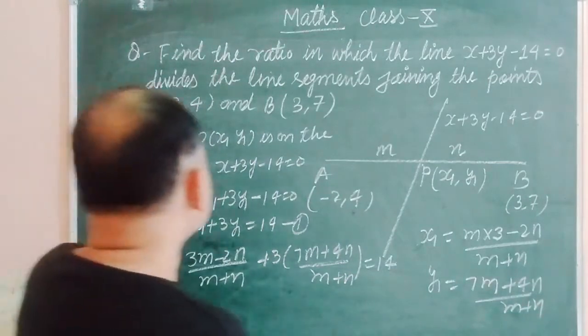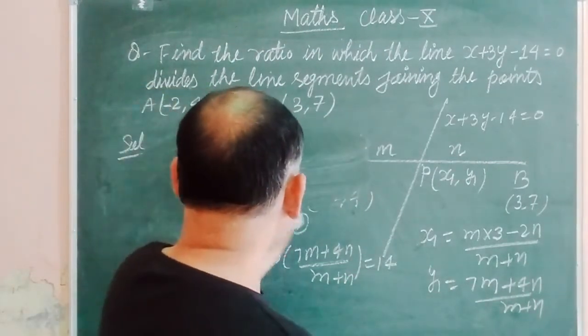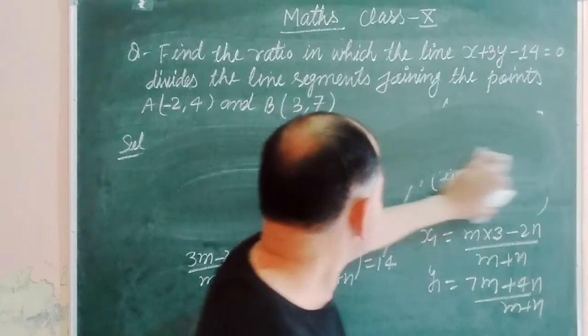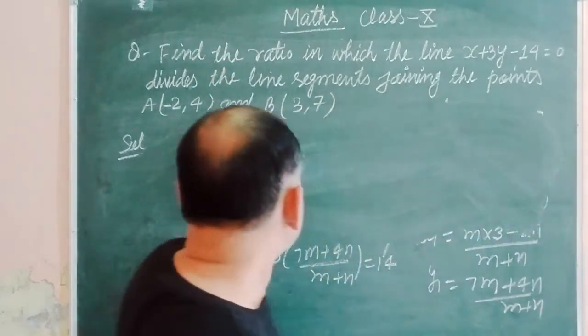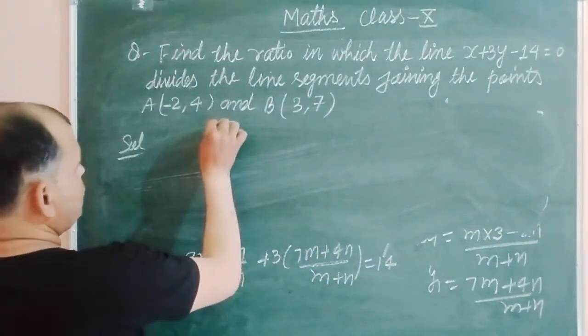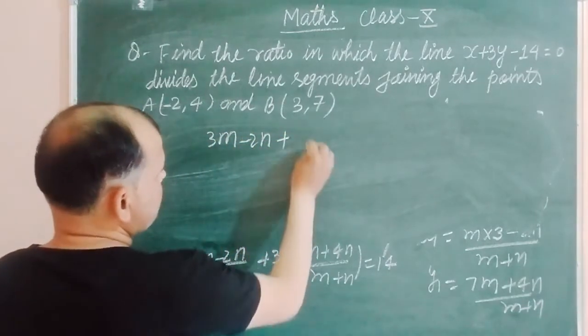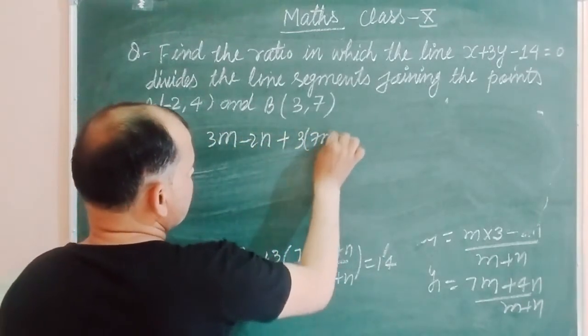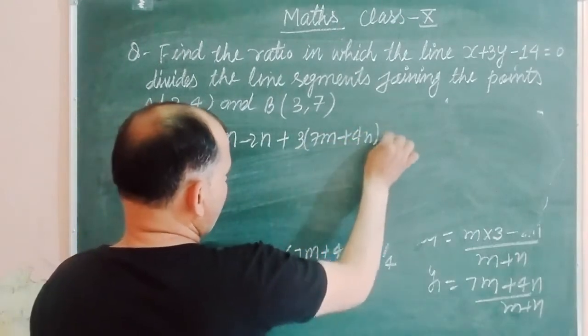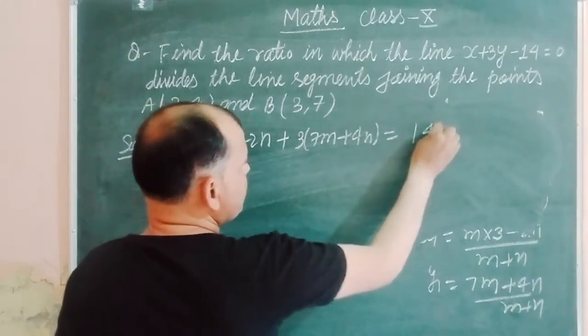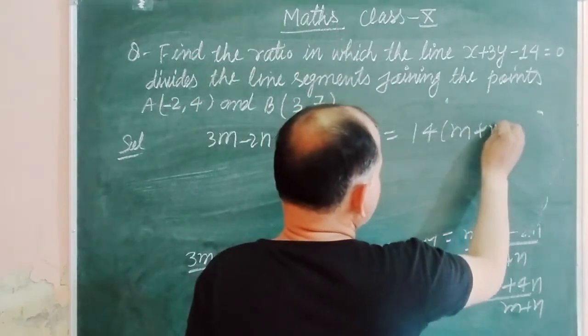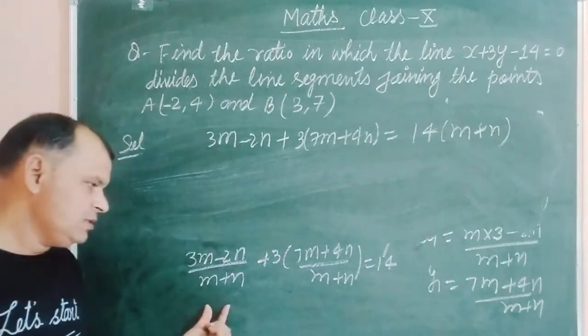Now we solve it and find m over n. So 3m minus 2n plus 3 times 7m plus 12n, and 14 times m plus n is common in the denominator. This will be cross multiplied with 14.